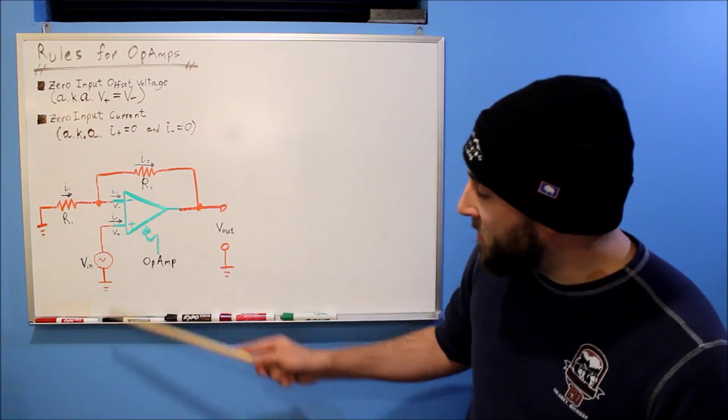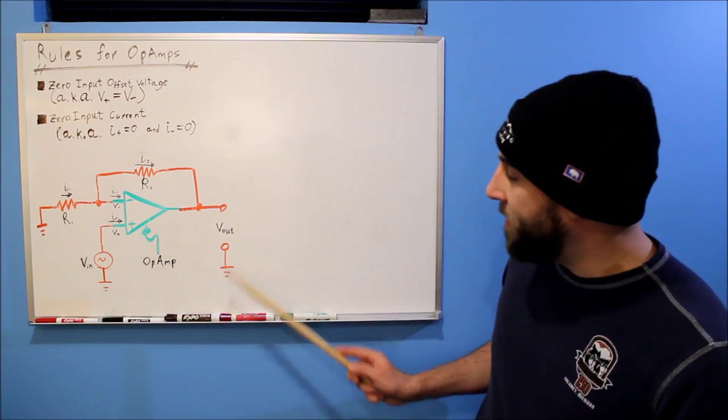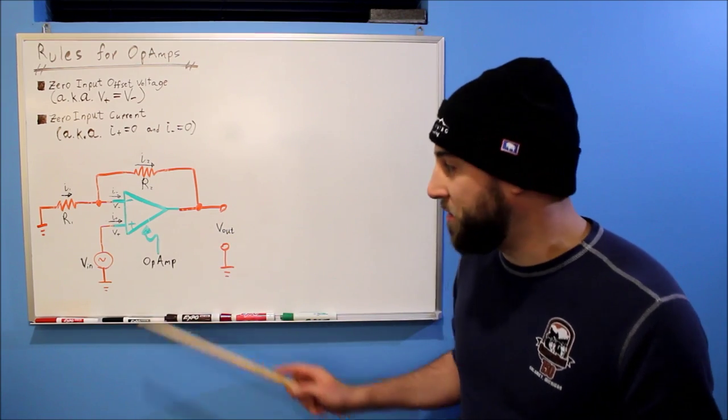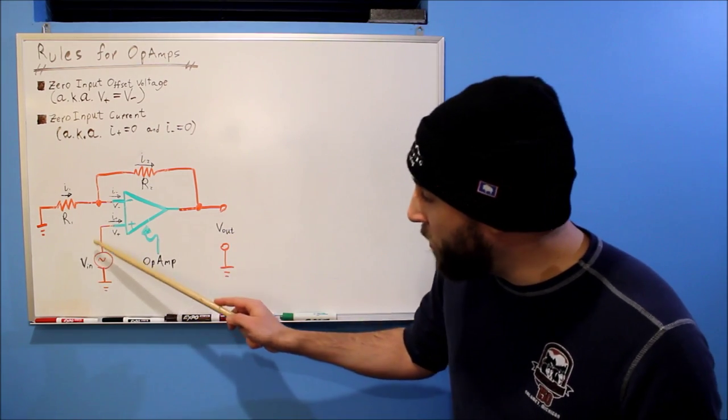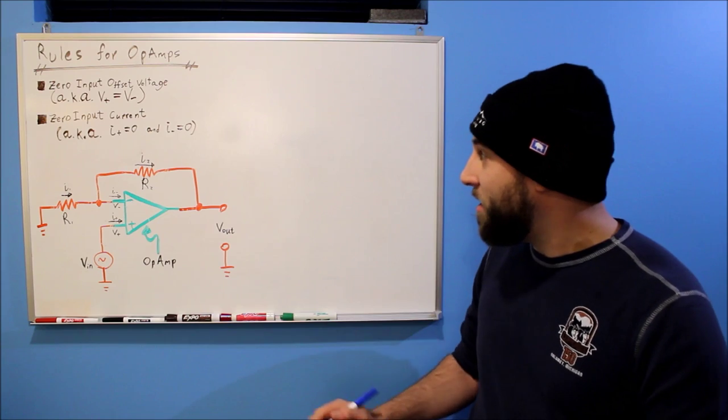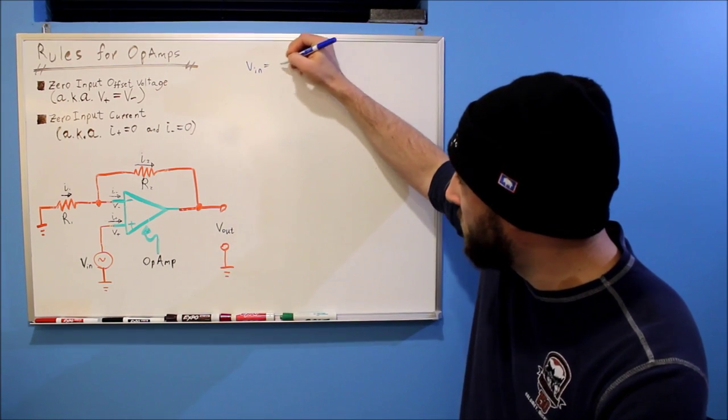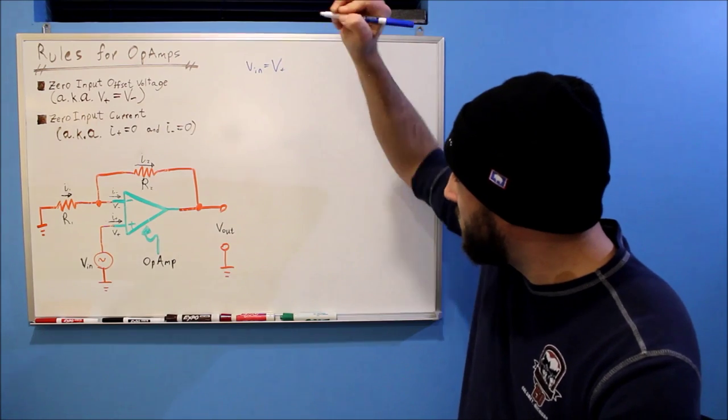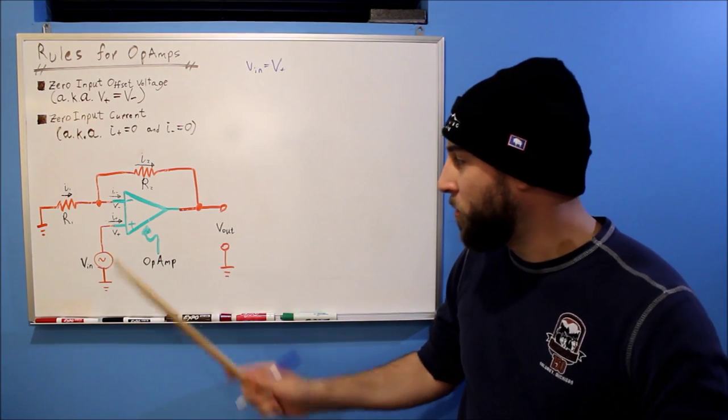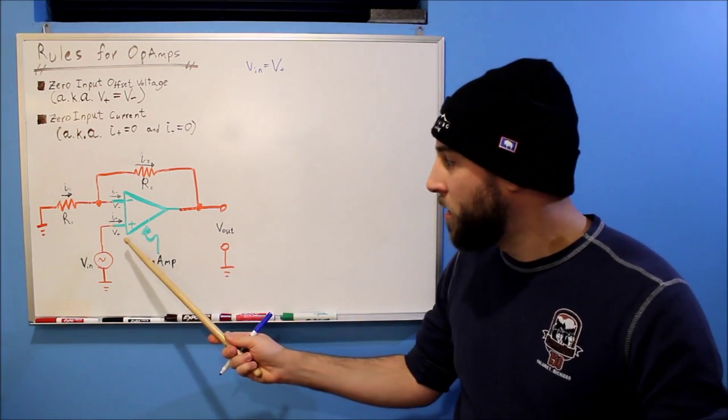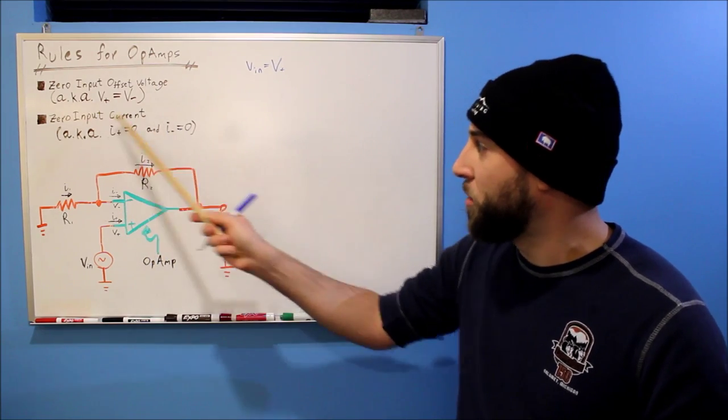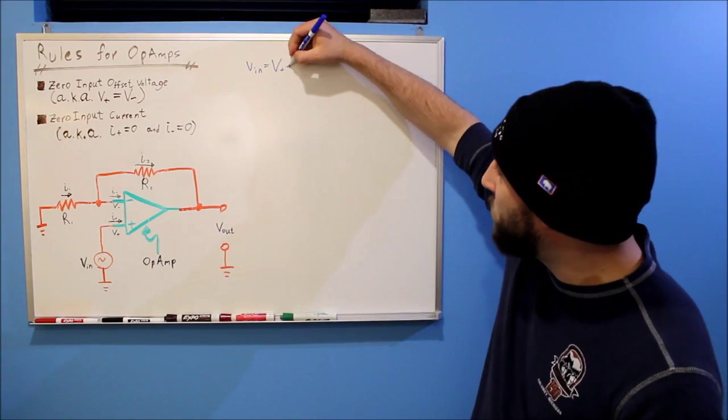So let's look at, let's start with V in because we need to find V in and V out to find the transfer function. For V in, well that hooks right into our non-inverting input. So that means V in equals V plus. Now what do we know about the voltages here? Well, V plus equals V minus. That's this rule here. So we can write that as well.